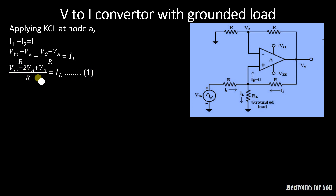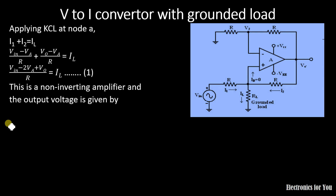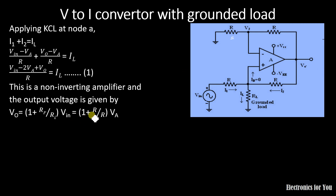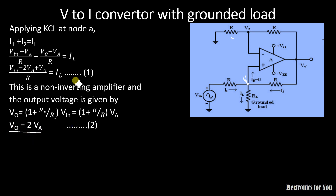Now we need to find the voltage VA at the non-inverting terminal. For a non-inverting amplifier, the output voltage is VO equals 1 plus RF upon RI into VIN. Here RF equals R and RI equals R, so it becomes 1 plus R upon R into VA. Since VIN equals VA, this gives VO equals 2VA.